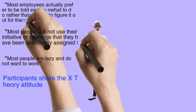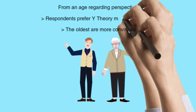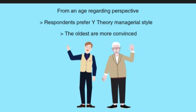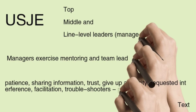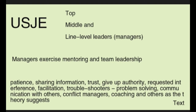From an age perspective, the results show that even though respondents prefer Theory Y managerial style, there is a slight difference between the oldest respondents' opinions and those who are younger. The oldest are more convinced that managers in the company practice Theory Y managerial style. These conclusions relate to the real picture of leadership style within USJE, spread across top, middle, and line-level leaders. The managers in USJE exercise mentoring and team leadership, using skills such as patience, sharing information, trust, giving up authority, and requested interference.